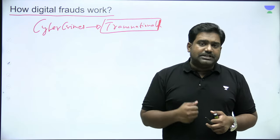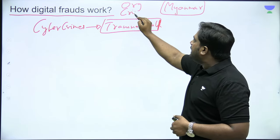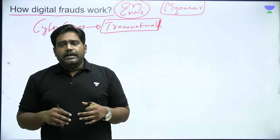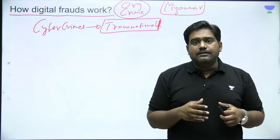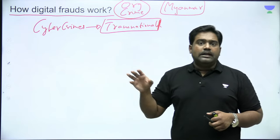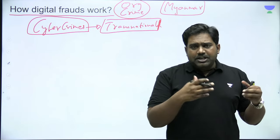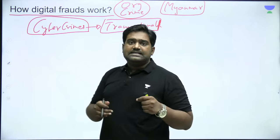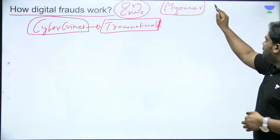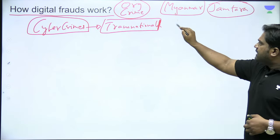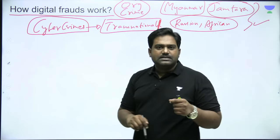Cyber crimes have become transnational organized crime — comparable to drug trafficking and human trafficking in scale. Myanmar has become a major hub where criminal cartels professionally run fraudulent operations. In India, places like Jamtara are well-known examples. Russian and African cartels are also very proficient in these scams. Fraudsters conceal their identity, IP address, and location using the anonymity offered in cyberspace, which enables them to commit crimes blatantly.